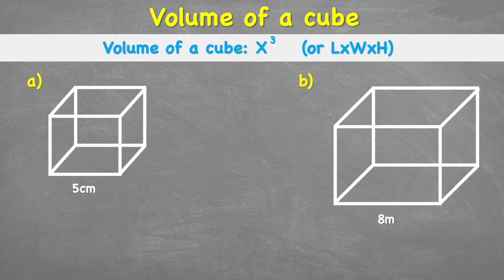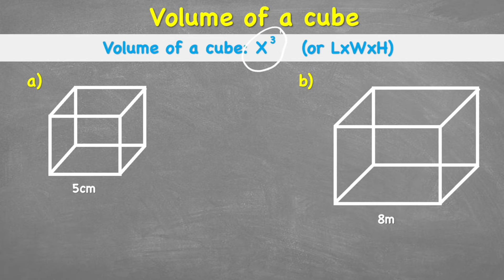When finding the volume of a cube, we have this formula and the formula is X cubed, where X refers to one of the lengths of the sides. Or we could use length times width times height — each of those is going to give you the same answer. We're going to look at both of those with both of these examples.